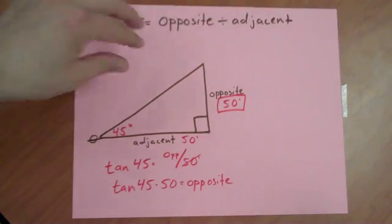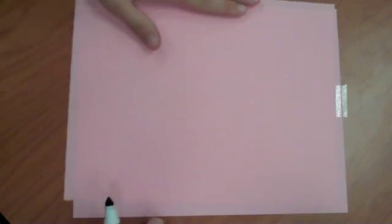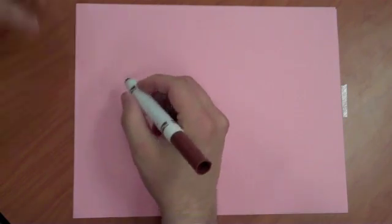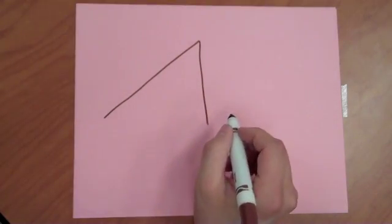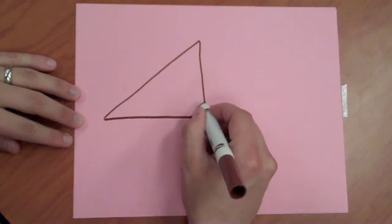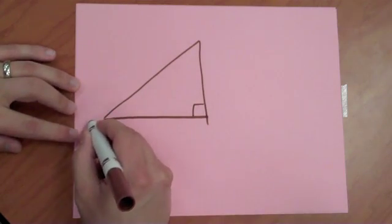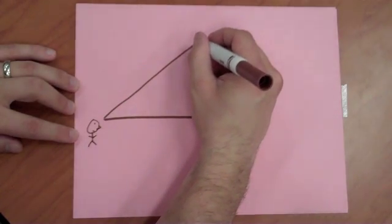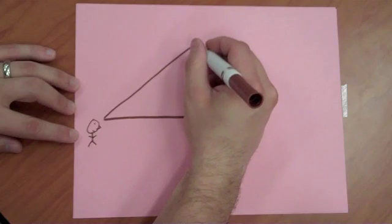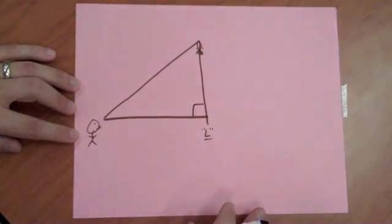Now what does this have to do with our bottle rockets? Well, I'm going to draw my triangle again. This time I'm going to add to my triangle: this is you watching your bottle rocket. Here's your rocket up here flying high at apogee. And I'm going to put an L right here to signify that's where we launch the rocket from.